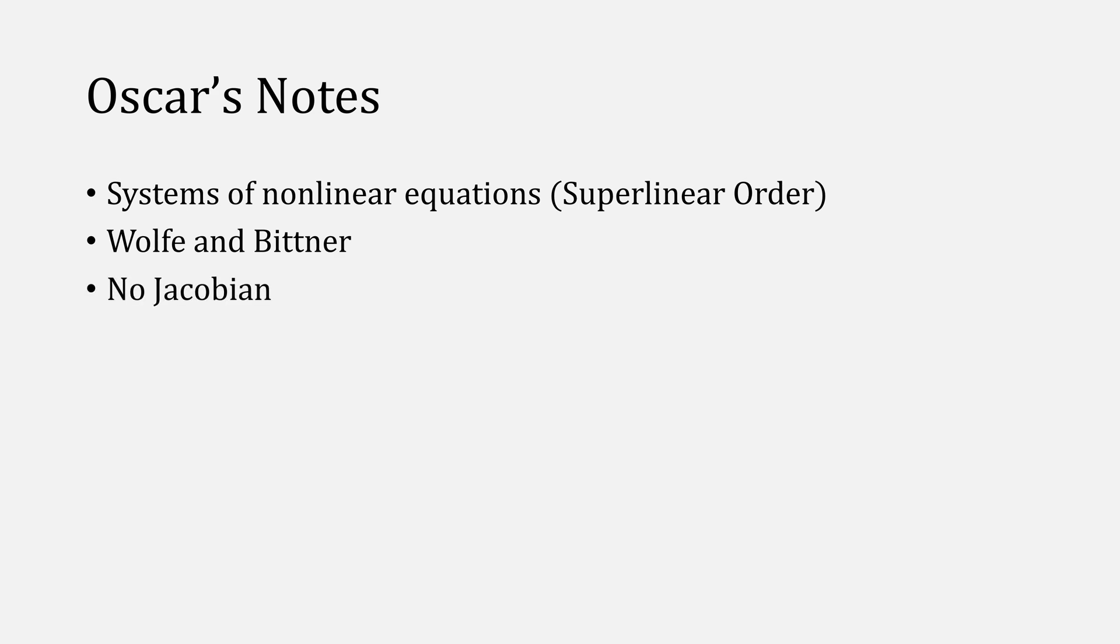In summary, you can use secant method to solve systems of nonlinear equations, giving you a superlinear order. The method should be credited to Wolff and Wittner, and there actually isn't a Jacobian. We also need to solve a linear system each iteration, and start with d plus 1 starting points.